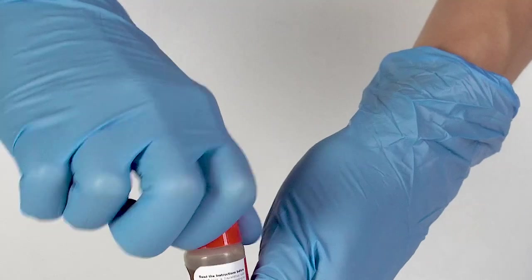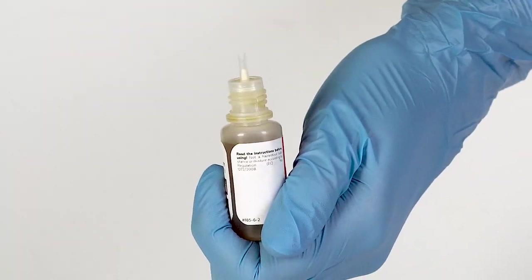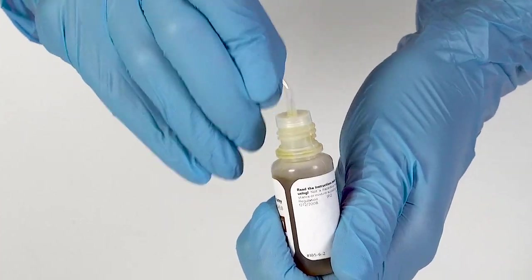To open a bottle containing a reagent, push the cap down and turn it. Pierce the bottle nozzle with an unbent paperclip.